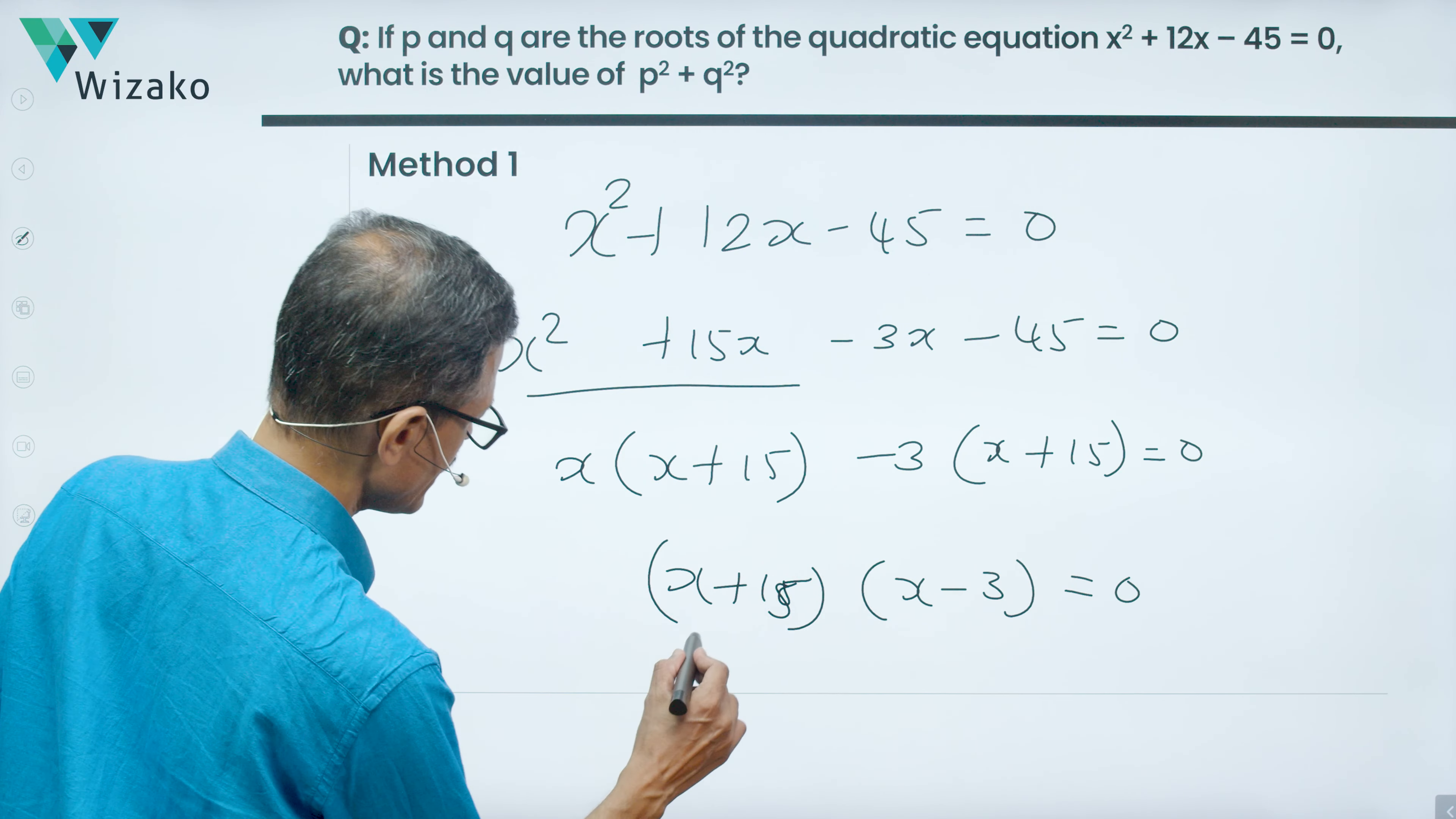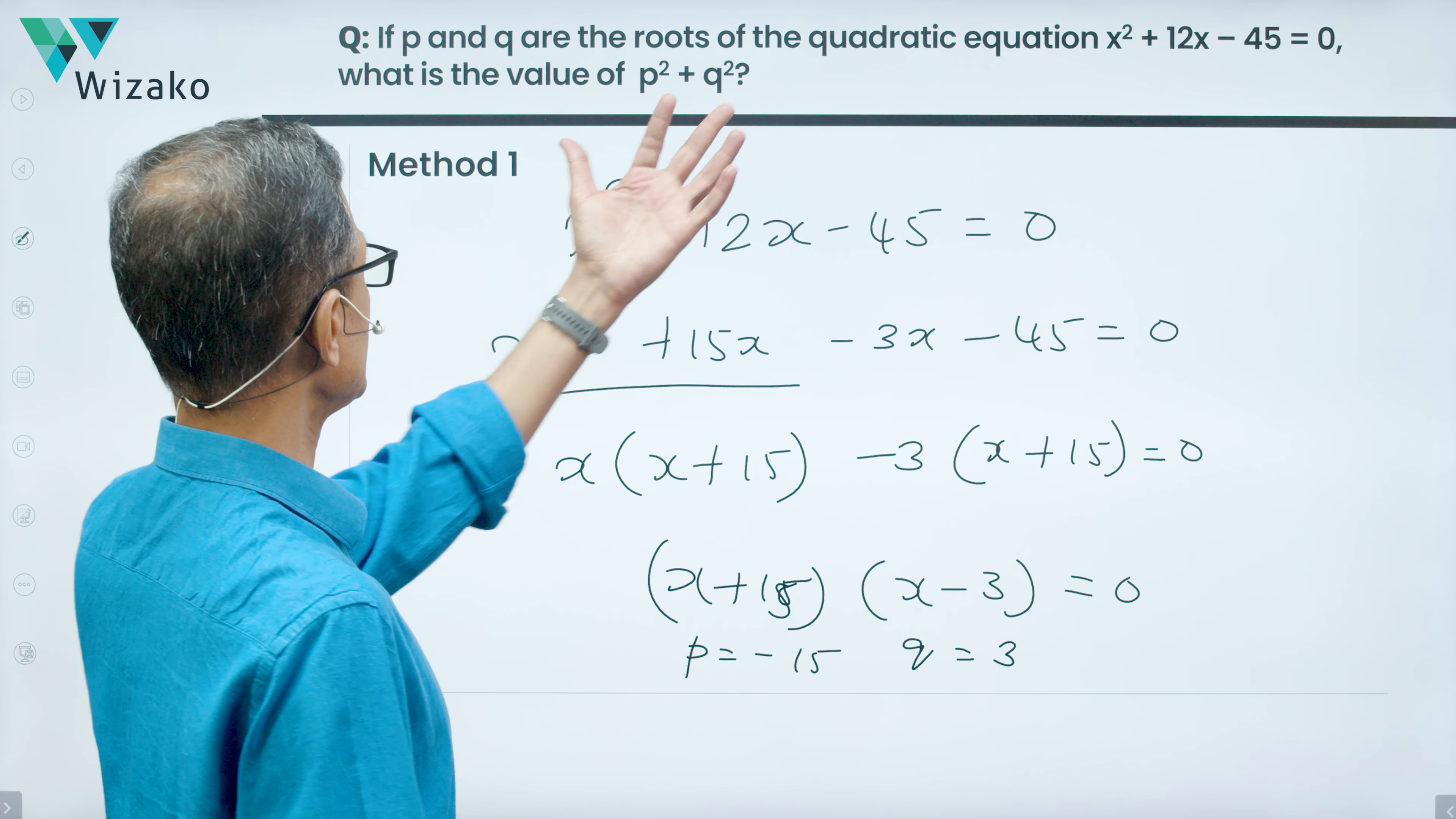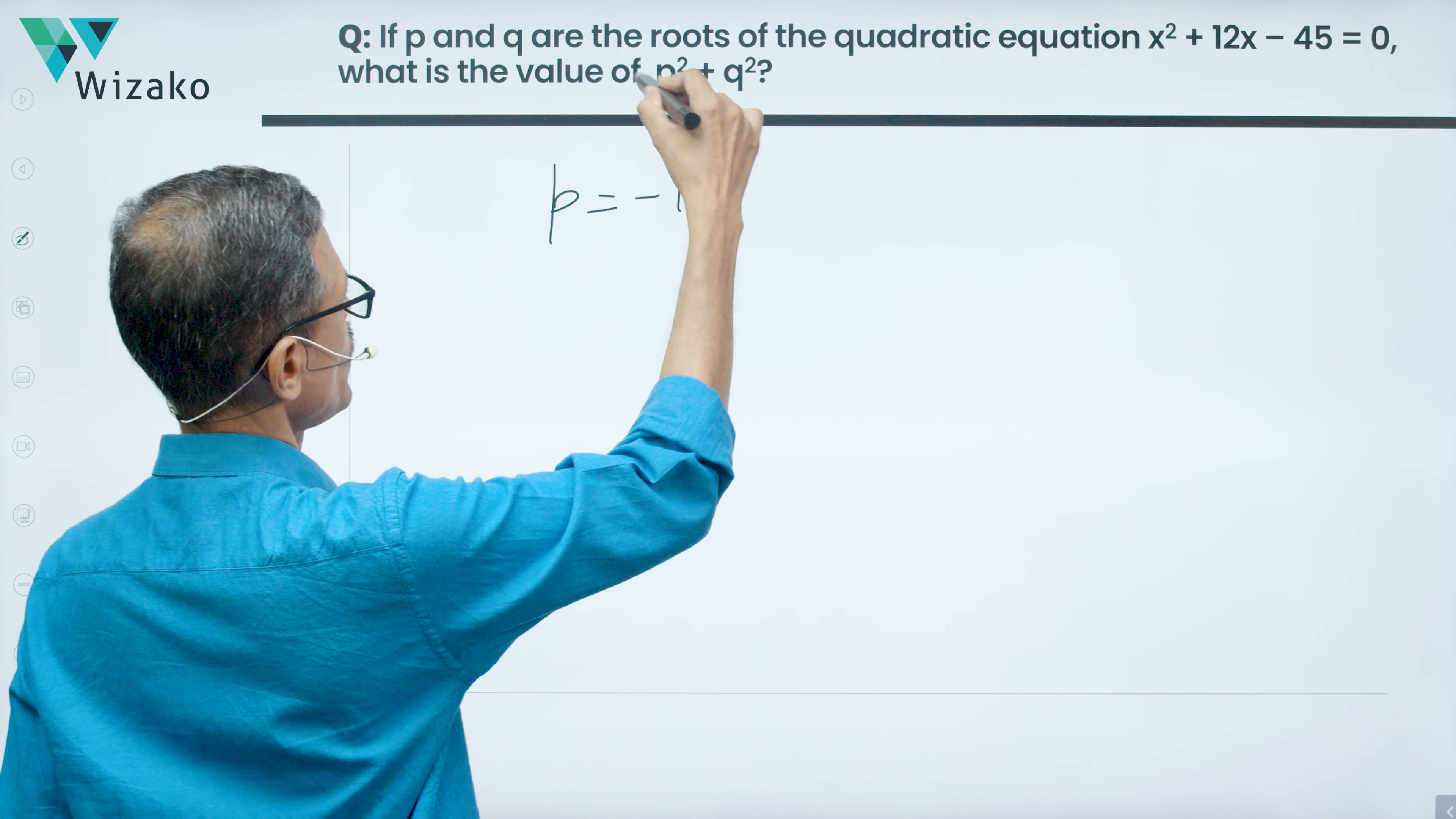So let's take p to be equal to -15, one of the roots, q to be equal to 3, which is the other root. Now what do we have to find out? We need to find out p² + q². So p is equal to -15. It could be p or q, it really doesn't matter because you are squaring and adding it.